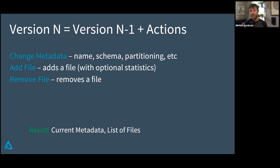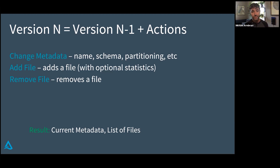An example of an action: you can change the metadata of the table — its name, human-readable description, schema, or partitioning. You record that by saying, here is the new metadata for the table. Another operation is to add or remove data. When we add a file, we can also store optional statistics — things like the min and max value of any given column, the number of nulls, the number of rows. That is used later by the system to do data skipping and partition pruning. And of course, since this isn't append-only, we also need to be able to remove files that were present in a previous version.